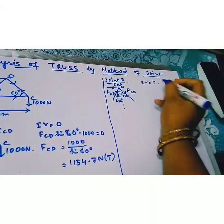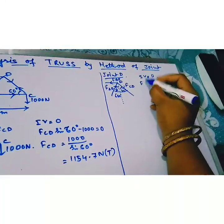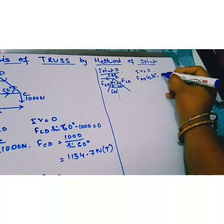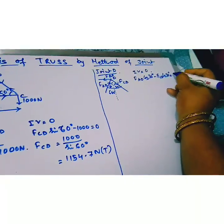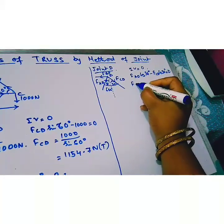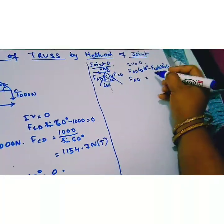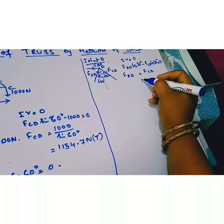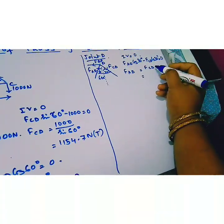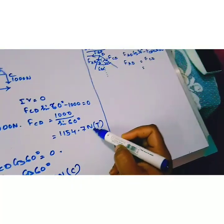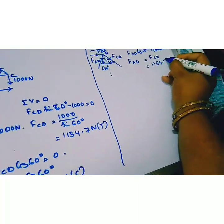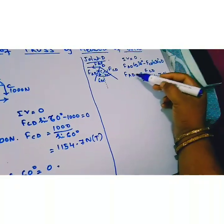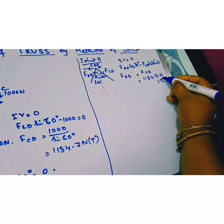Summation of vertical force equal to 0. FAD cos 30 degree minus FCD cos 30 degree equal to 0. FAD equal to FCD. We already know the value of FCD. FCD is 1154.7 newton. The value becomes positive, we assume this member is compression member and prove that it is also a compression member.